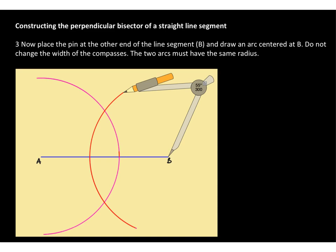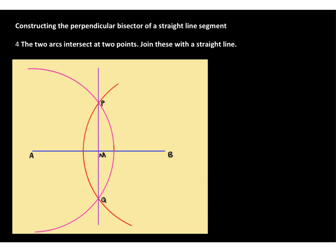Place the pin at the other end of the line segment, so at point B, and draw an arc centered at B. You must not change the width of the compasses when you're drawing these two arcs. The two arcs must have the same radius for this to work. Now, the two arcs intersect at two points, P and Q, and we join these with a straight line. And this straight line, which you can see in purple here, this is the perpendicular bisector of the line segment AB.